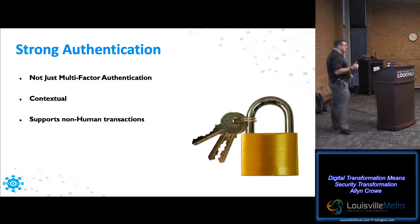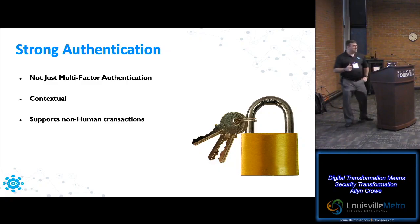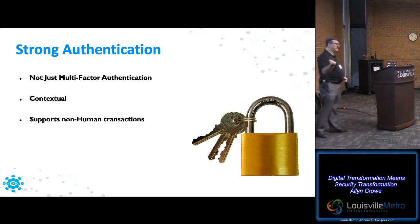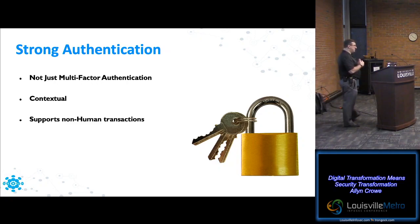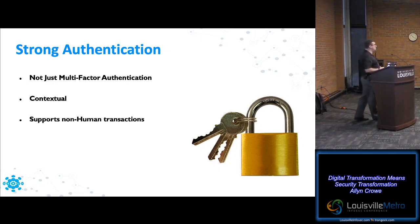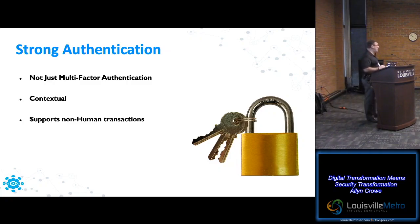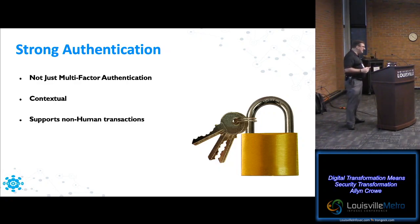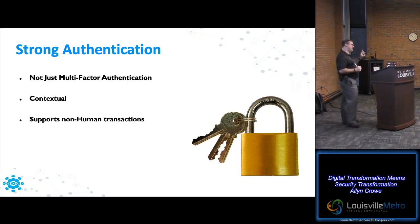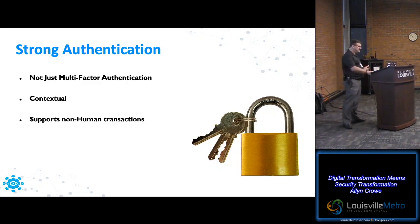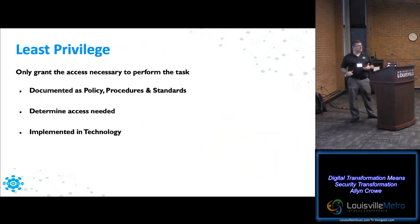The first piece of zero trust we're going to talk about is strong authentication — and that doesn't just mean using a multi-factor piece. Multi-factor is helpful, but you also need to look at things like mutual authentication, where rather than just a one-sided authentication, the other side authenticates back as well. It's contextual — beyond just credentials, it's location, time of day, unusual times, checking for time travel and multiple logins. All of those pieces feed into the context surrounding the authentication request. It also needs to support non-human transactions: cryptographic exchanges, challenge-response system-to-system authentication, and API keys and API authentication.